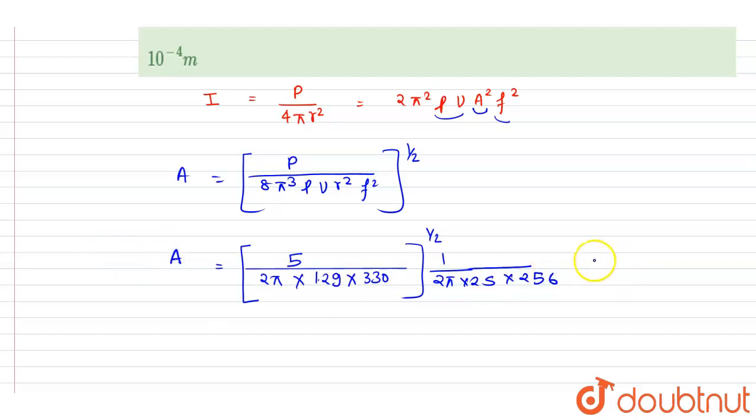this is the amplitude. So after solving, you will get it is nearly equal to 10 to the power minus 6 meters.